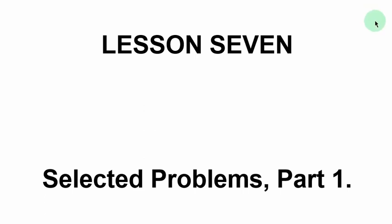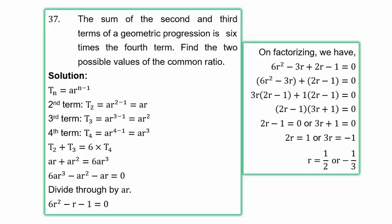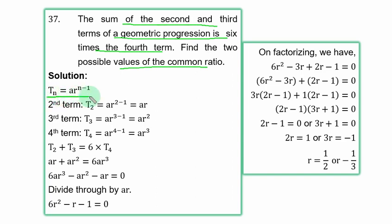Lesson 7 selected problems, part 1. Example 37: the sum of the second and third terms of a geometric progression is 6 times the fourth term. Find the two possible values of the common ratio. This problem centers around the nth term formula of a geometric progression. We need the second, third, and fourth terms.